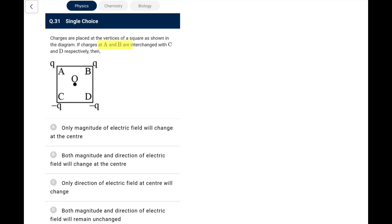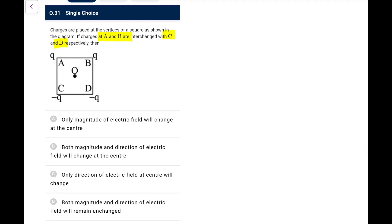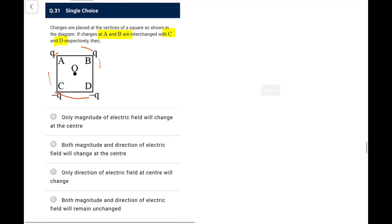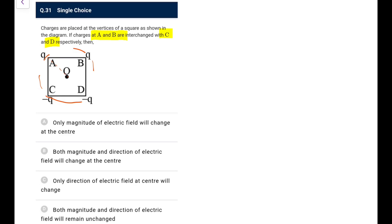Question 31: Charges placed at vertices of a square; charges A and B are interchanged with C and D. The potential remains the same since the net charge arrangement gives kq/r = 0. However, for the electric field: originally the field has a certain direction; after swapping, the direction reverses but magnitude remains the same by symmetry. Go for option C.